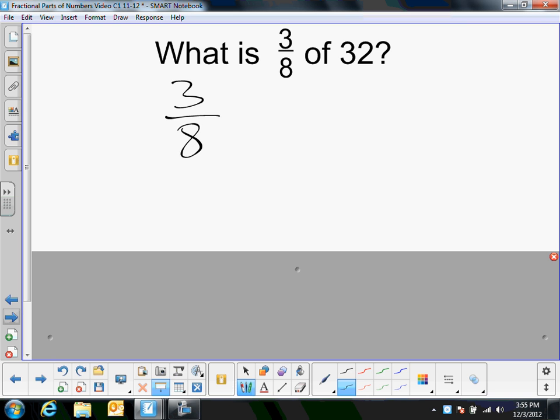Three eighths of means times 32. I'm going to put it over one because it's a whole number and I want to multiply. Now you can do this with me, or you can pause it and try that yourself. So again, I'm going to look diagonally, three and one. They have no common factors, so I can't divide both of them.